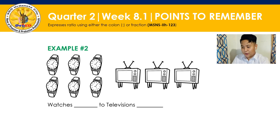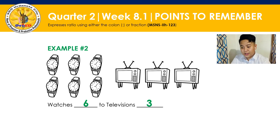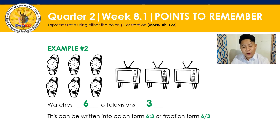Another example. We have 6 watches and 3 televisions. Nauna yung 6 sa 3. The ratio is 6 watches to 3 televisions. We can write this ratio in colon form: 6 colon 3 or 6 to 3. And also in fraction form: 6 over 3.